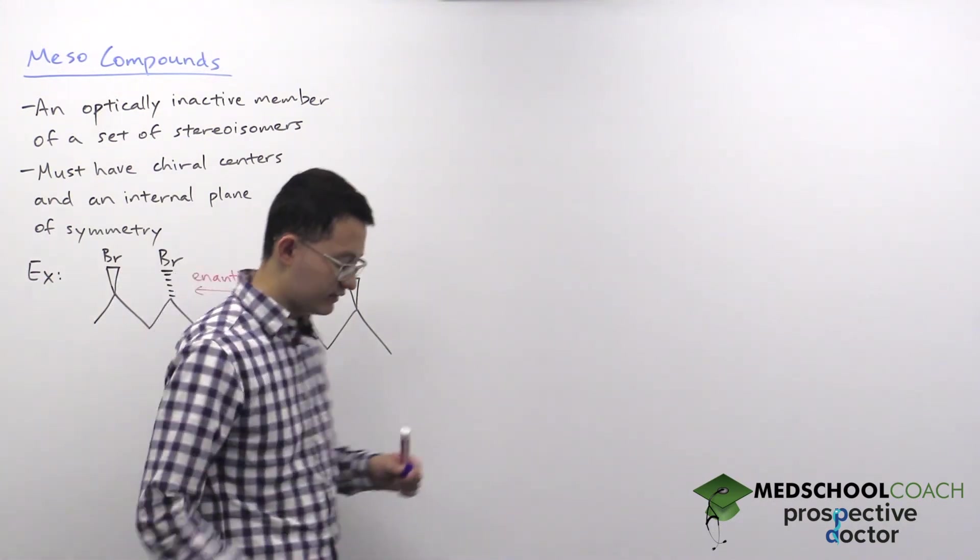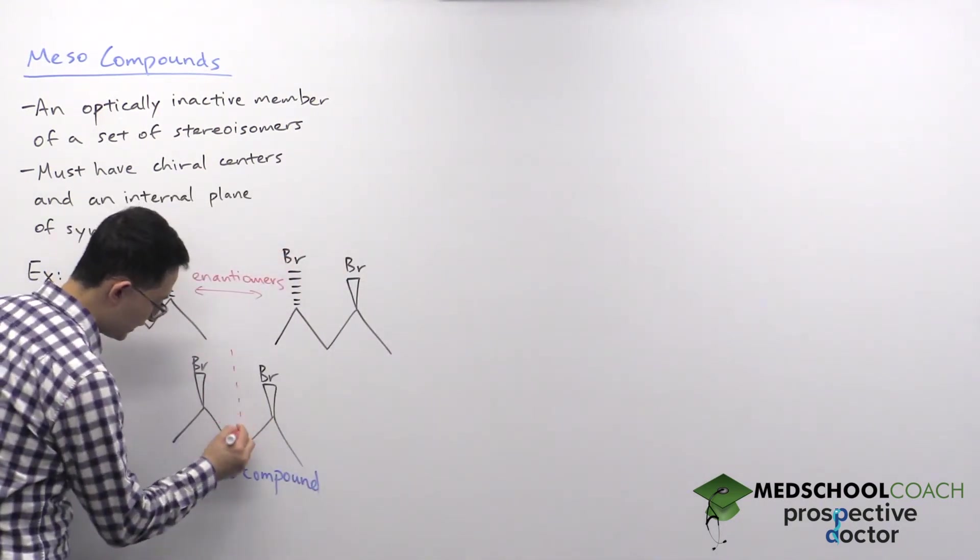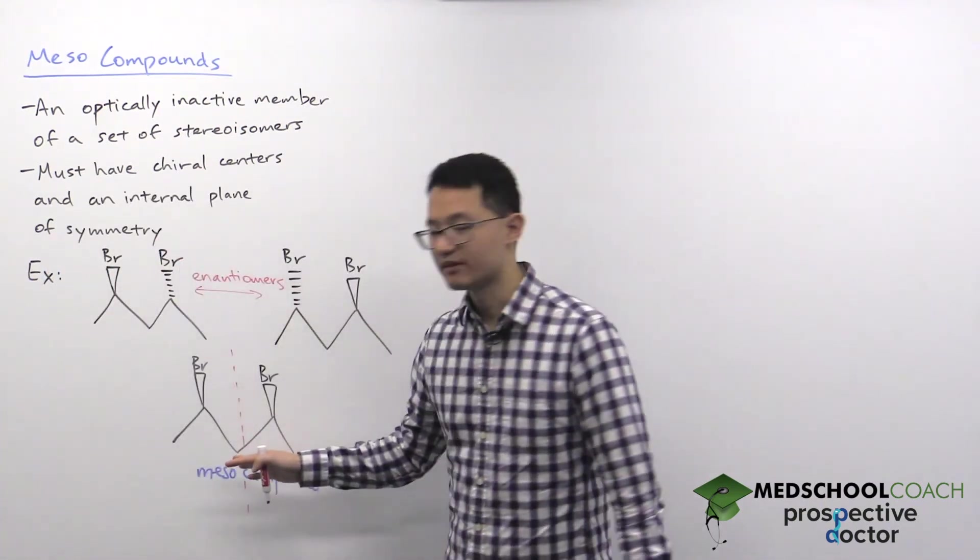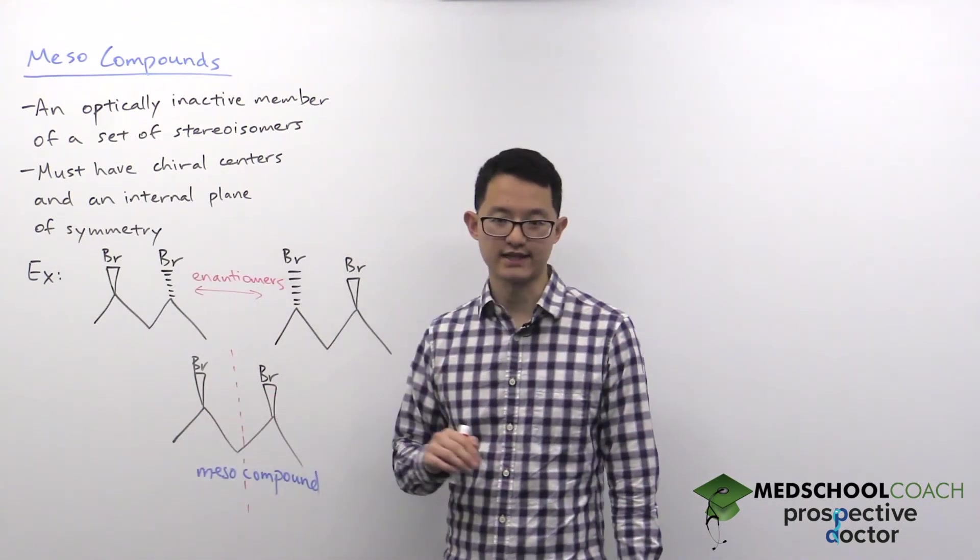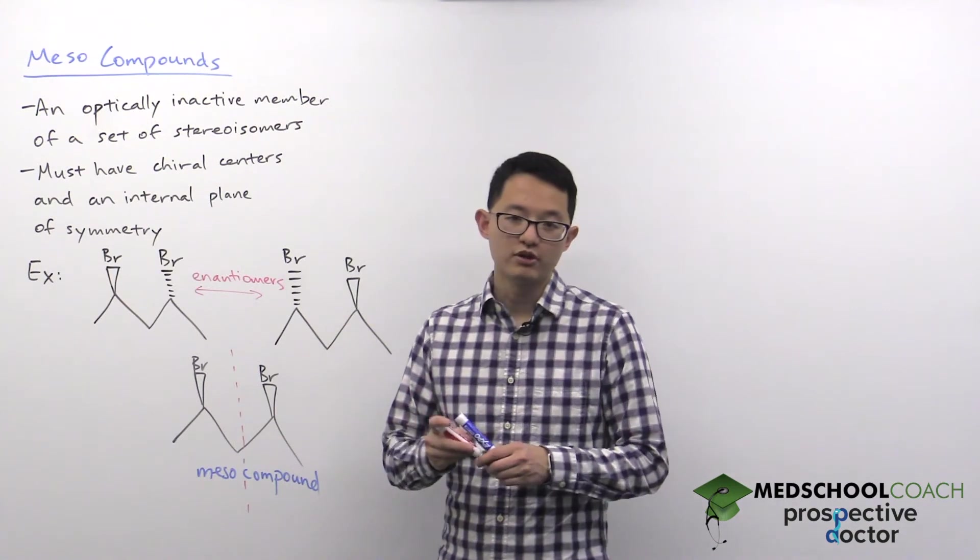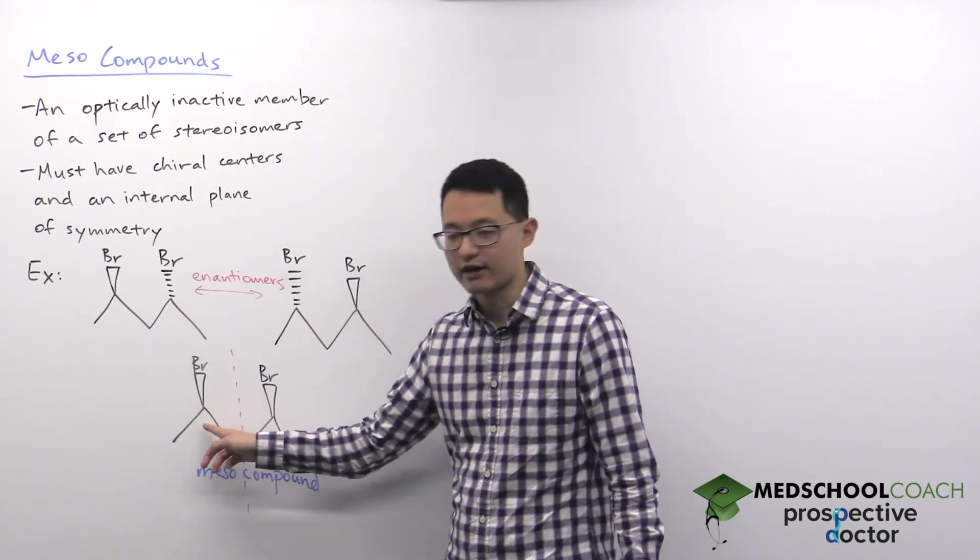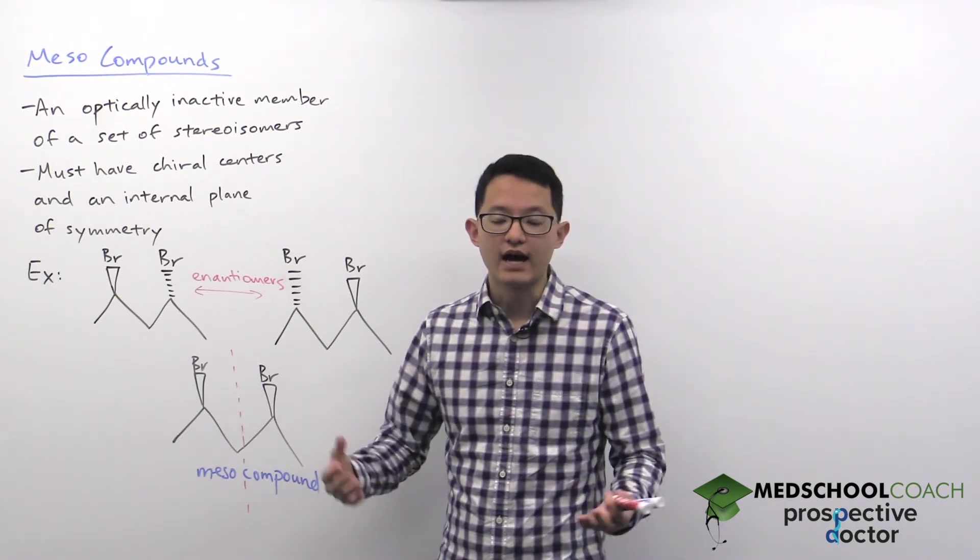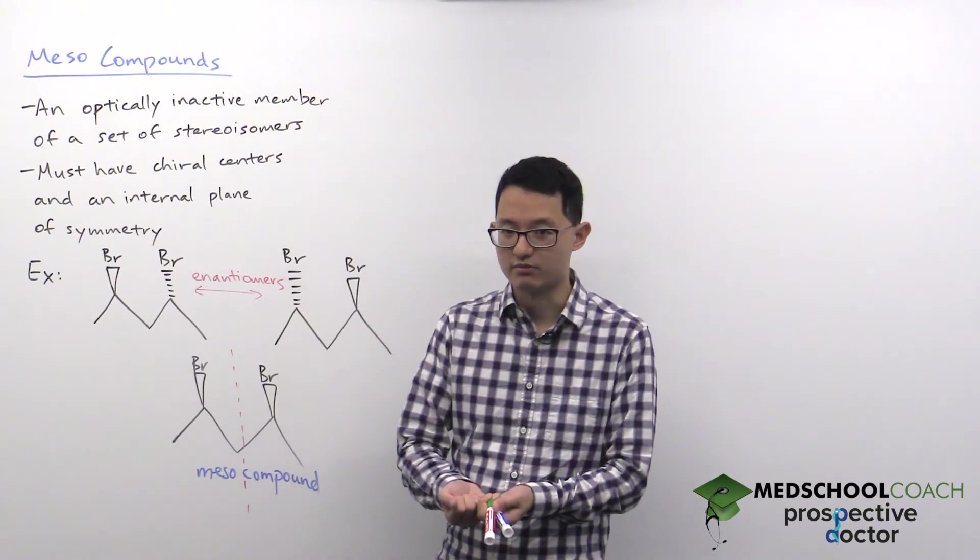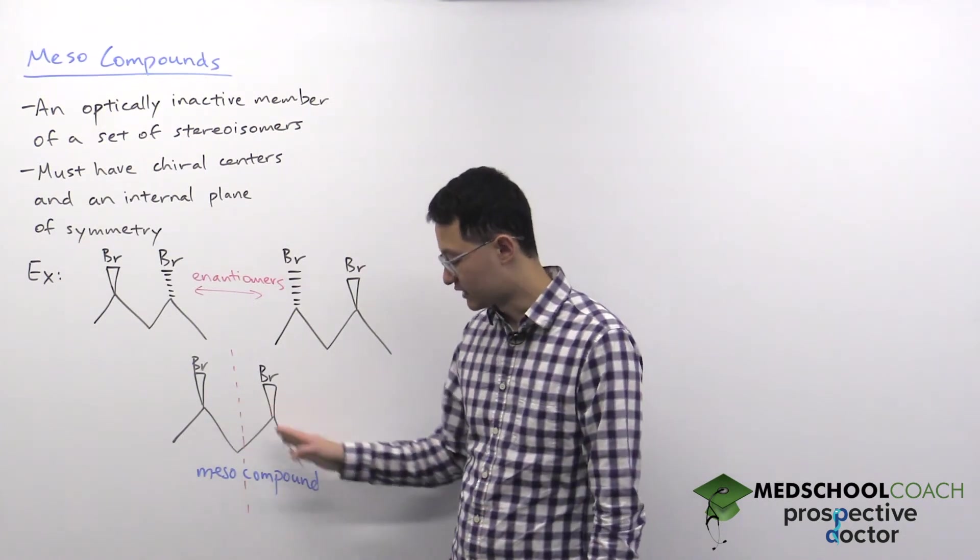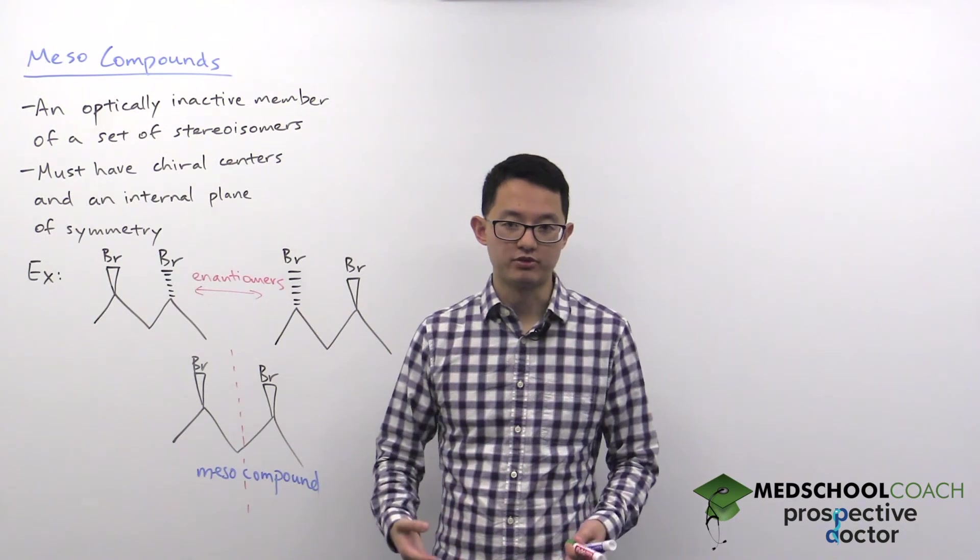And we can tell that it's meso because number one, it has a plane of symmetry right down the middle. So the left side of the molecule is identical to the right side of the molecule. And if you were to look at the absolute configurations, you would see that one chiral center would be R and the other one would be S. Again, it's like a fused pair of enantiomers. Their absolute configurations cancel out, so this compound as a whole does not have optical activity.